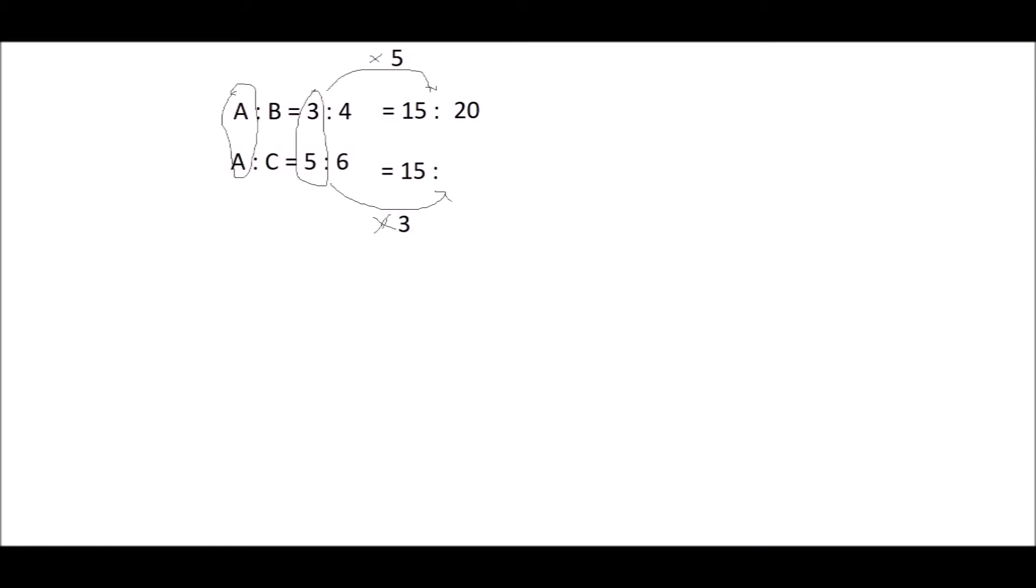While 5 can be turned into 15 by multiplying it with 3, and 6 multiplied by 3 is 18. So A to B to C is 15 to 20 to 18. Be careful on which part that needs to be made the same.